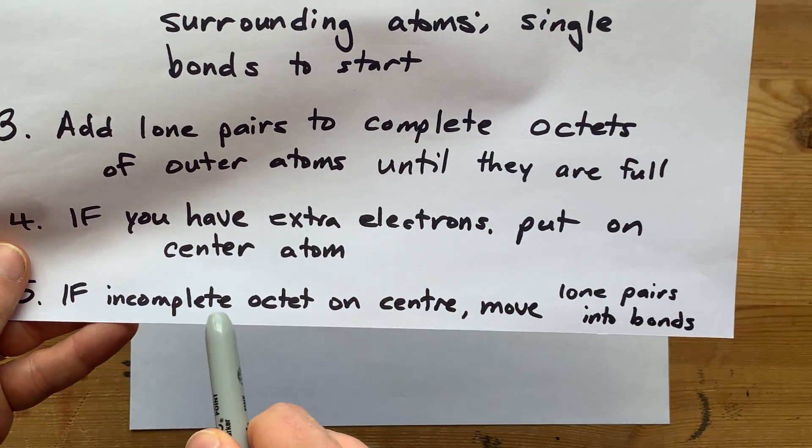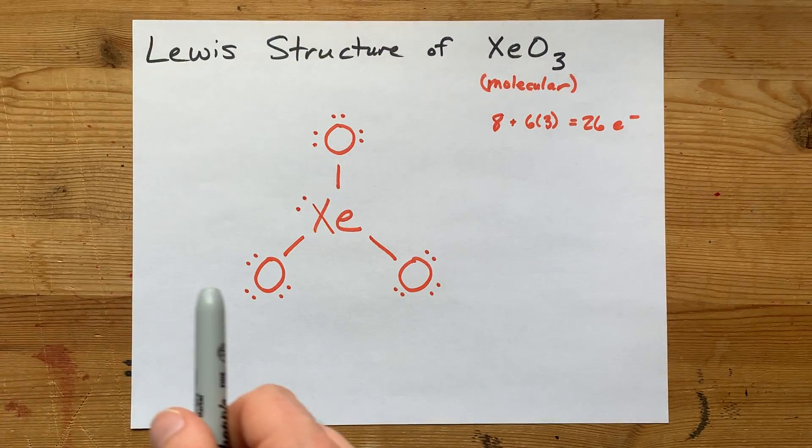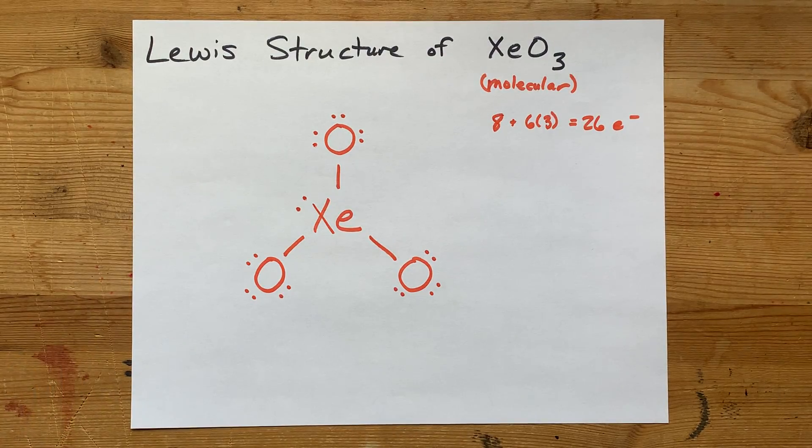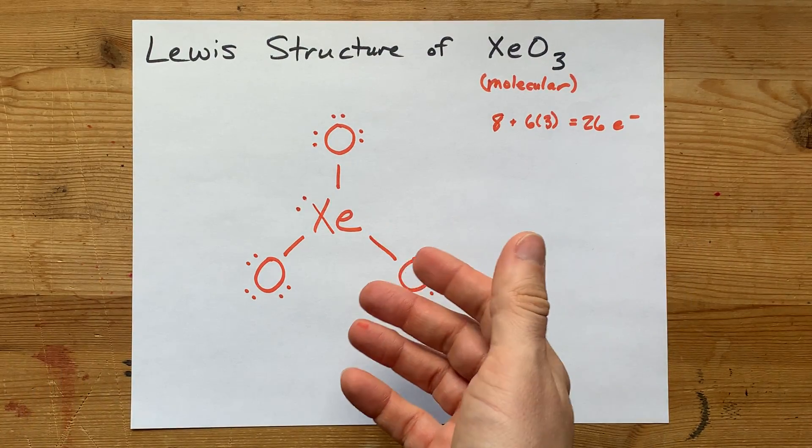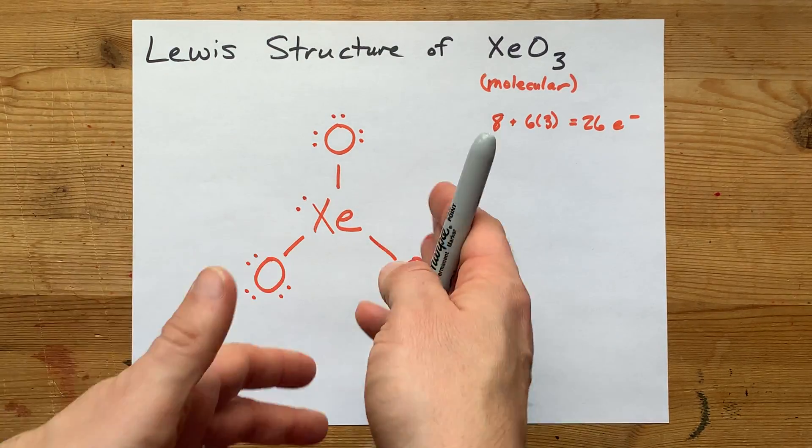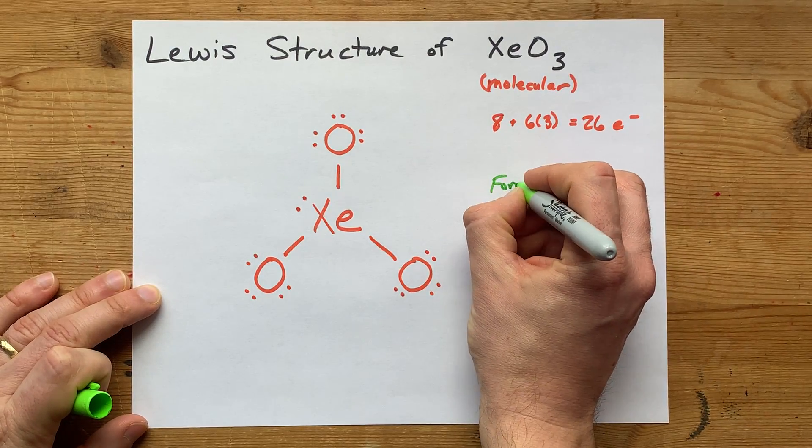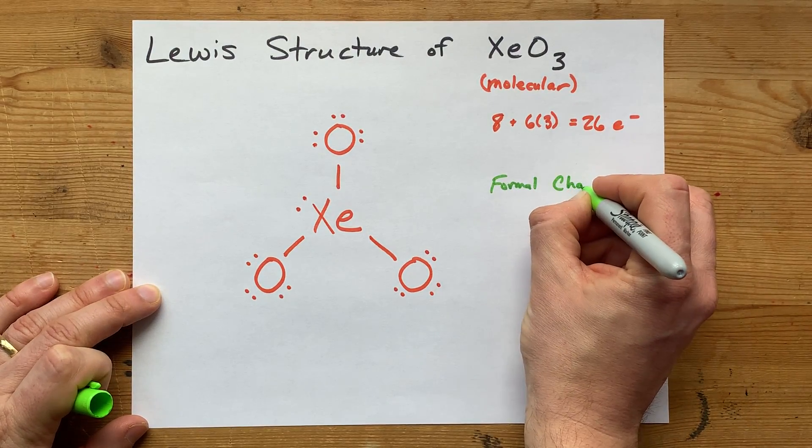And then if I have an incomplete octet on the central atom, I'm going to move lone pairs into bonds. Now, because xenon can have an expanded octet, I don't actually know yet if I want to make any double bonds. I'm going to use a thing called formal charge to figure out if I should.